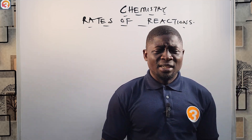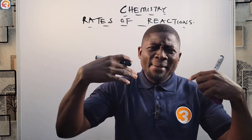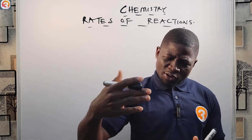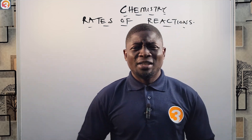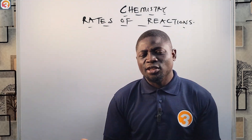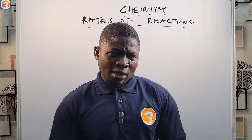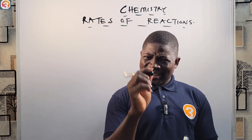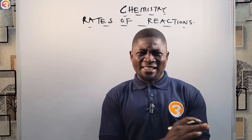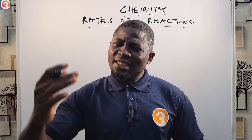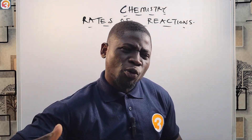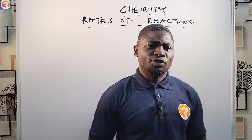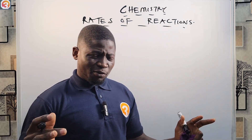There are many reasons that can make a single reaction occur at different rates. In the course of these lessons we are going to be looking at the factors that affect the rate of chemical reaction. So different reactions can occur at different rates, and a single reaction can also occur at different rates depending on the reaction conditions.